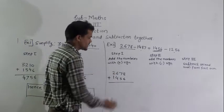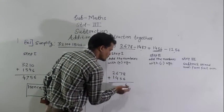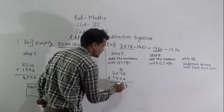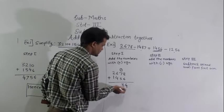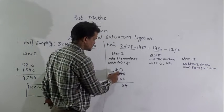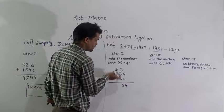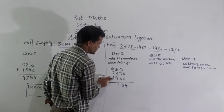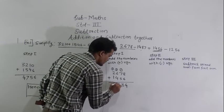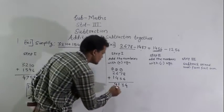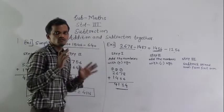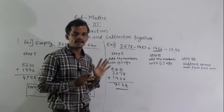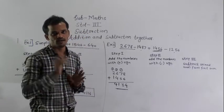Add 2,678 plus 1,456: 8 plus 6 is 14, write 4, carry 1. 7 plus 5 is 12, plus 1 carry is 13, write 3, carry 1. 6 plus 4 is 10, plus 1 carry is 11, write 1, carry 1. 2 plus 1 is 3, plus 1 carry is 4. So 4,134 is the first sum — the sum of numbers with plus signs.